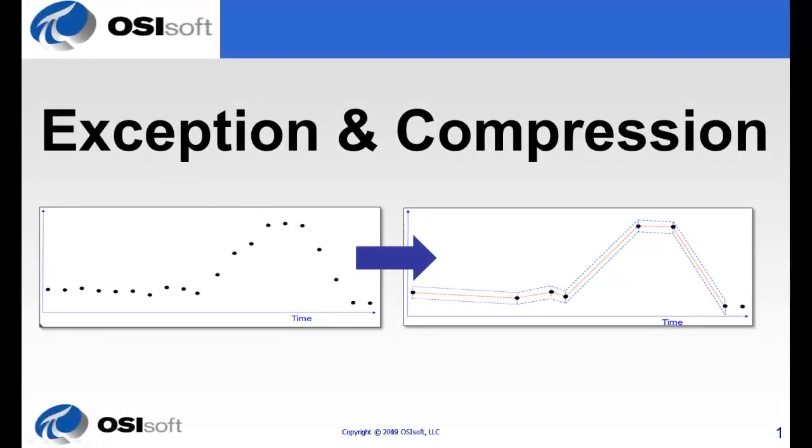Exception reporting and compression testing offer you the opportunity for maximum efficiency with your PI points. The idea is to only store meaningful data in the PI archives while discarding all the noise.